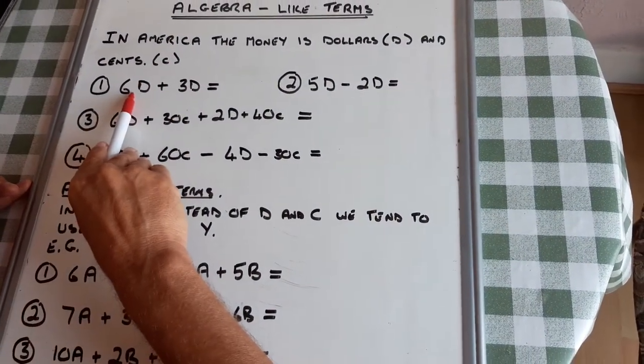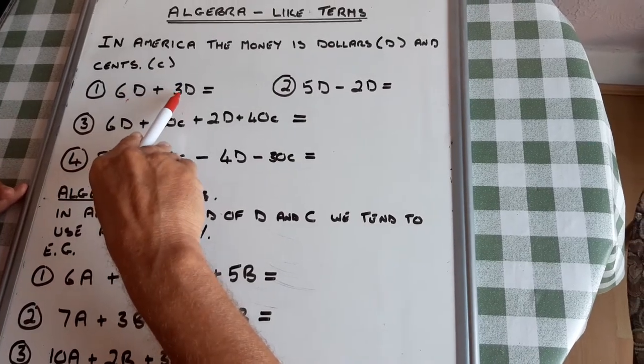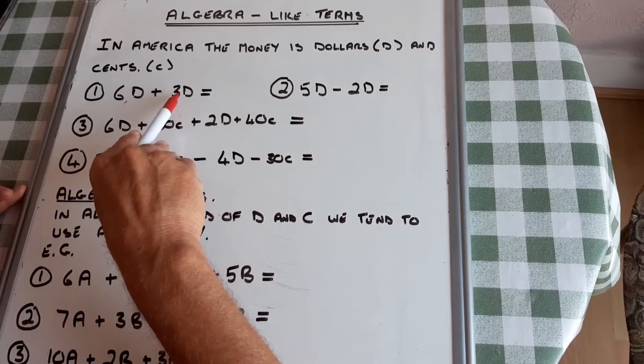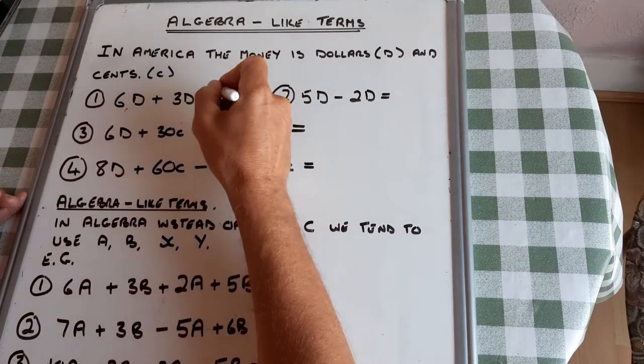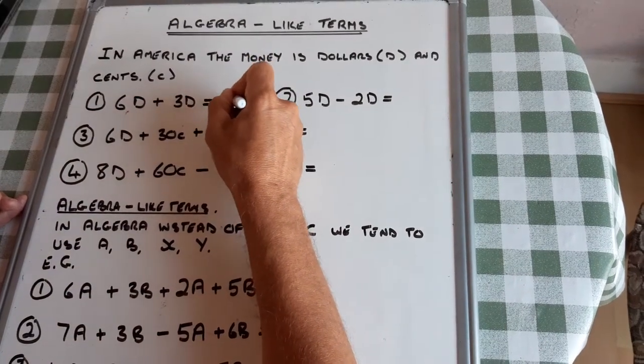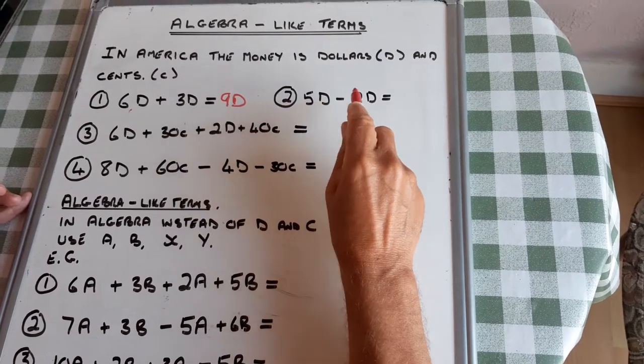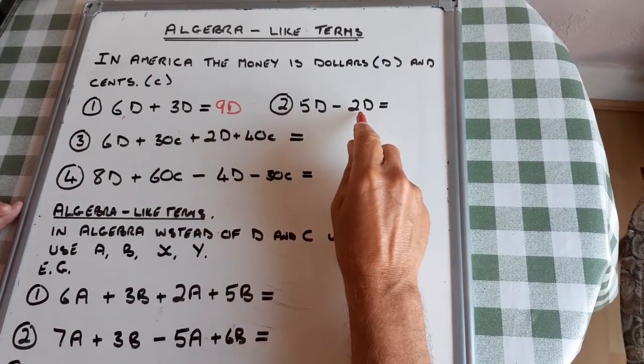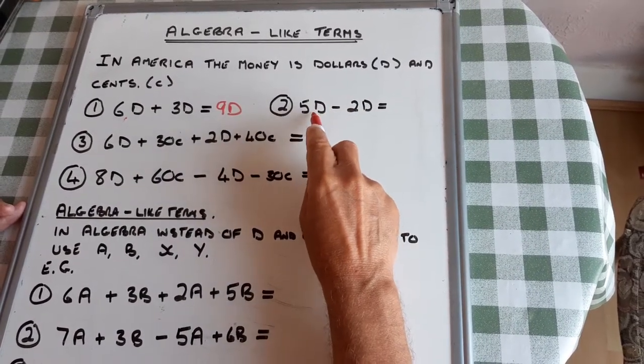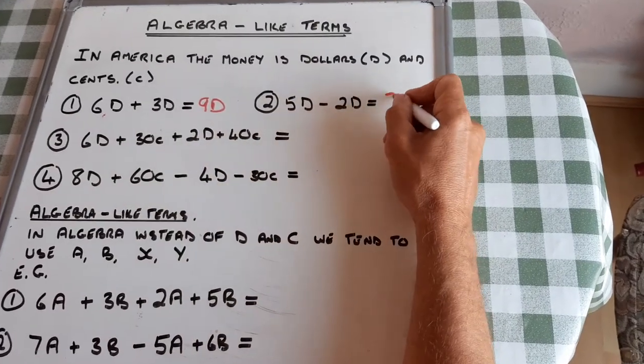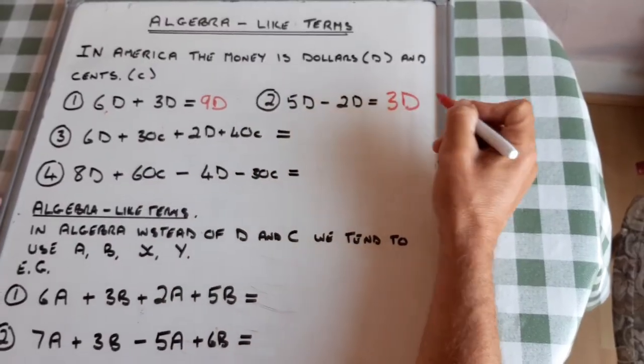I have six dollars, and Mr. Malkin gives me a further three dollars, so I would have nine D. I have five dollars, and I spent two dollars. Five take away two is three D.